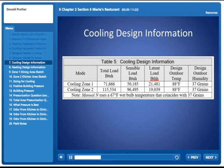37 grains is what we want. The outdoor design temperature at Maria's Restaurant is 88 degrees Fahrenheit. For Zone 1, the total load is 71,666, and for Zone 2, it's 115,534.